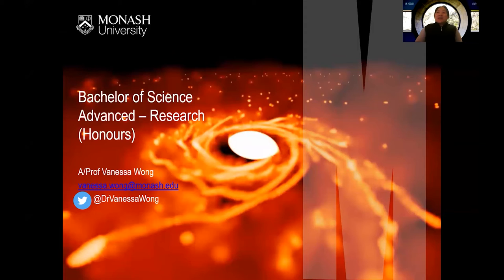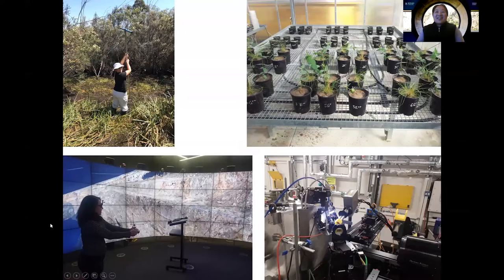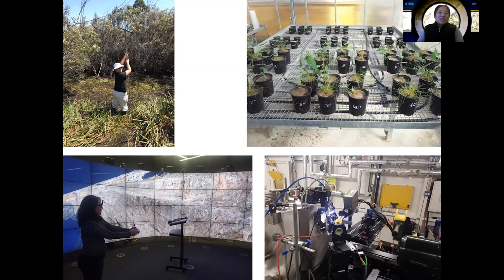Welcome to Inside Monash. I'm Vanessa Wong and I coordinate the Bachelor of Science Advanced Research degree. I sit in the School of Earth Atmosphere and Environment. Briefly, I'm a soil scientist and I studied environmental science — I study stuff below ground, how soils interact with plants, and how different amendments affect plant growth. I also build 3D models using different modelling techniques and use high-end equipment like the Synchrotron to look at soils in very high resolution. But tonight we're going to talk about Advanced Research.